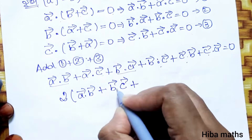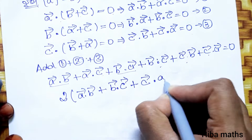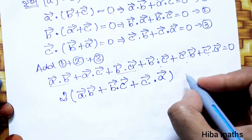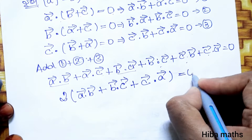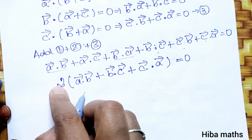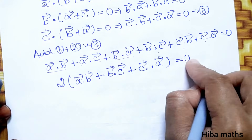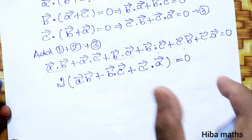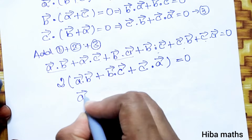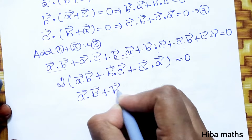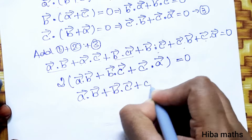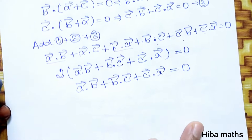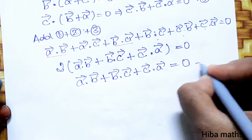Plus c vector dot a vector, which equals 0. Dividing both sides by 2, we get 0 divided by 2 = 0. Therefore the result is: a vector dot b vector + b vector dot c vector + c vector dot a vector = 0.